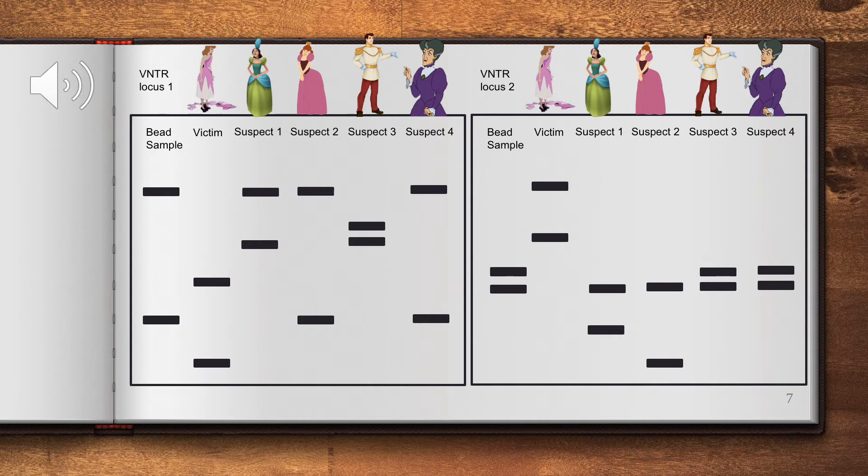Now looking at the first evil stepsister at Locus 1, one of her bands matches the sample bands. However, in order to name her guilty, both bands would have to match. Looking at Locus 2, again, only one of her bands matches the sample, thus we can declare she is not the culprit.